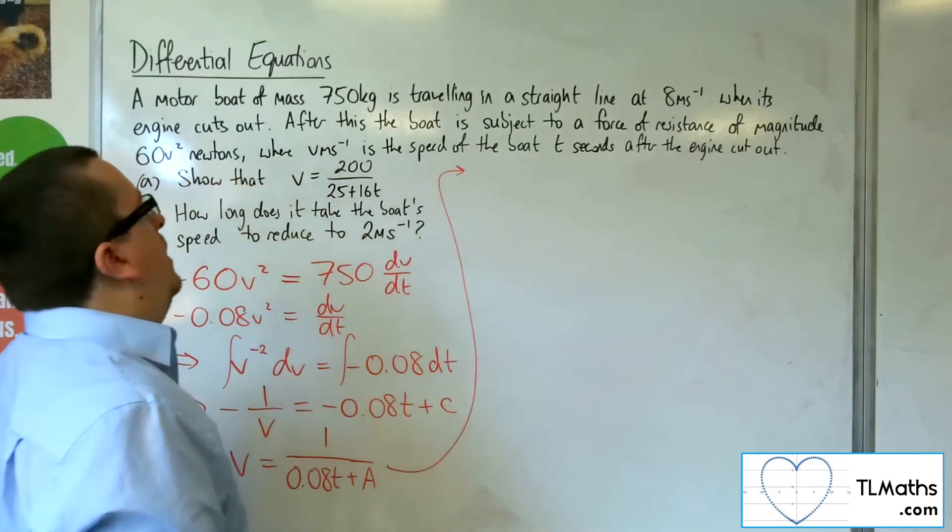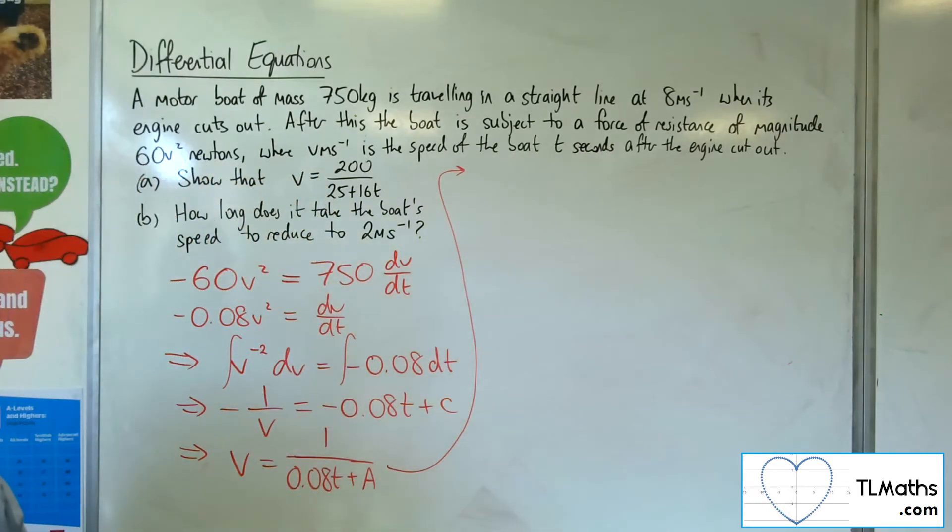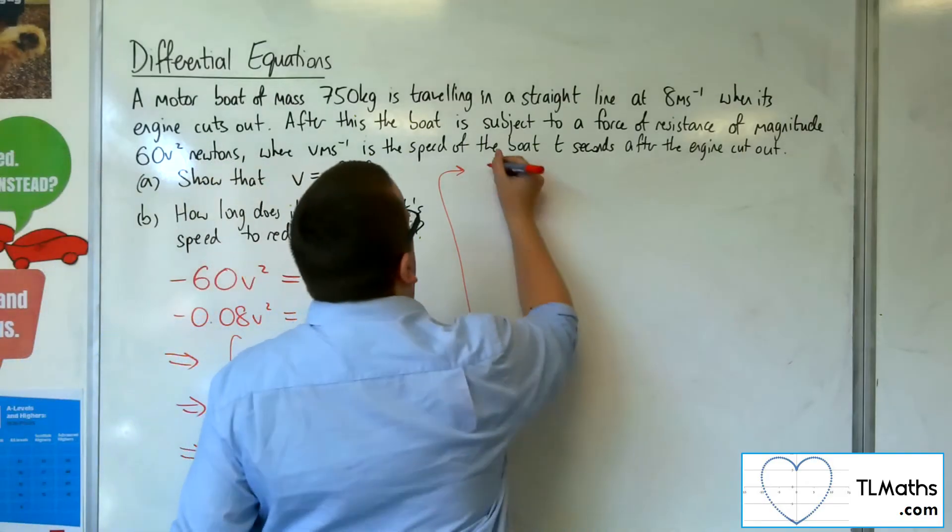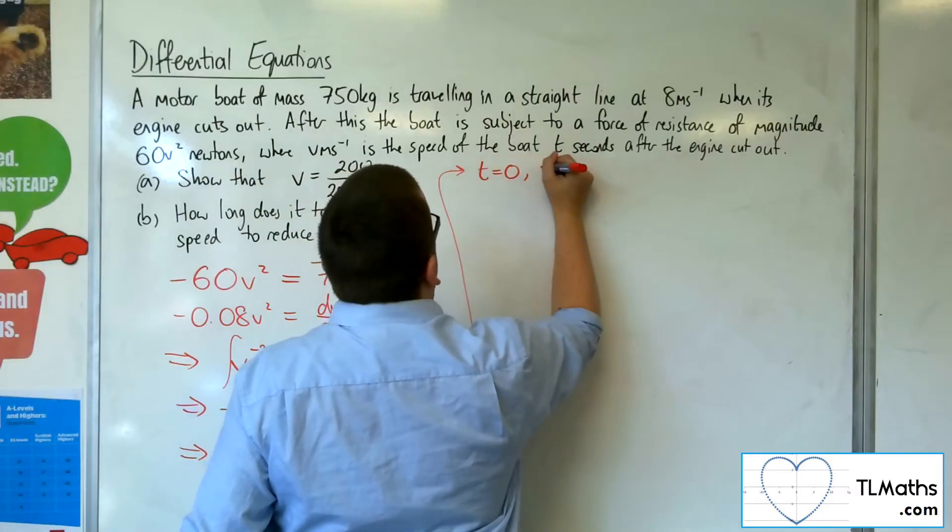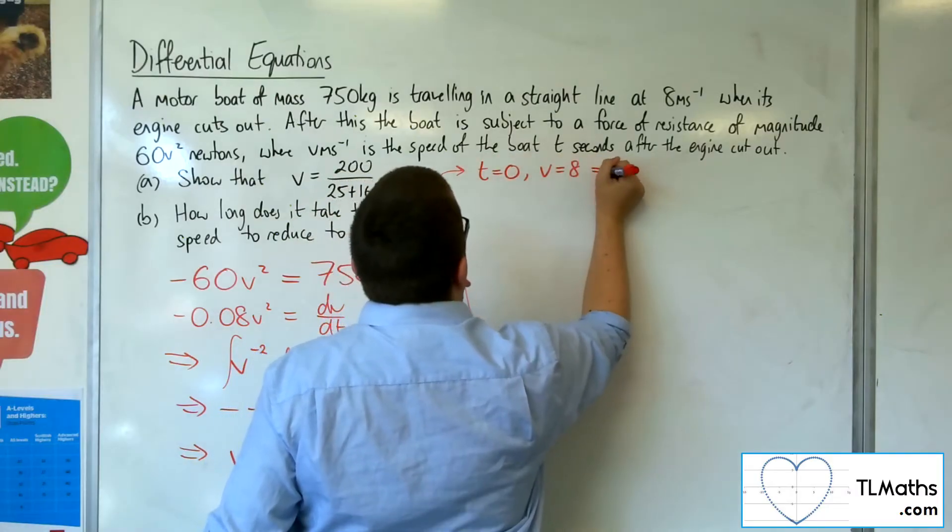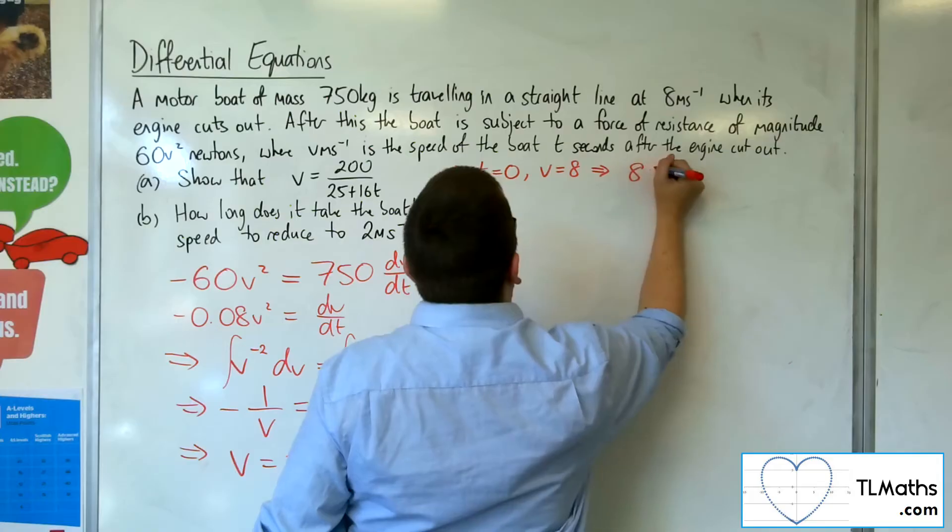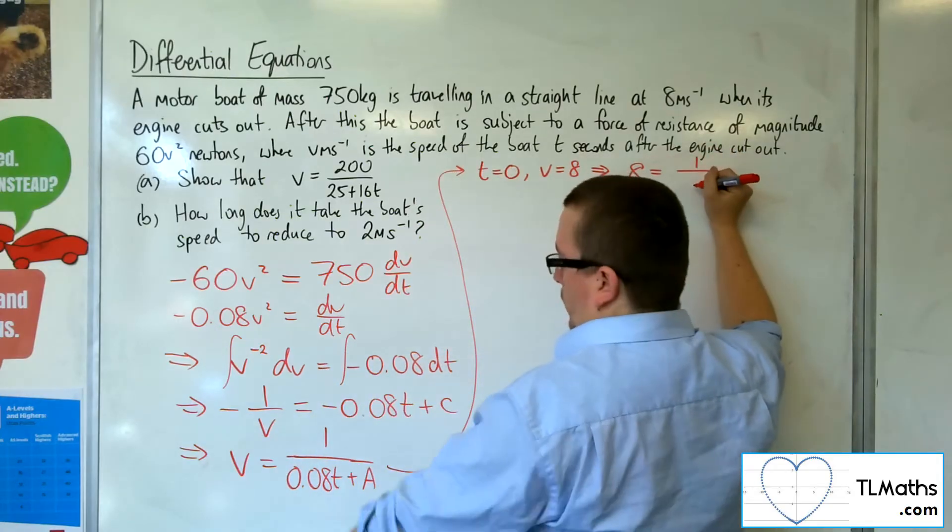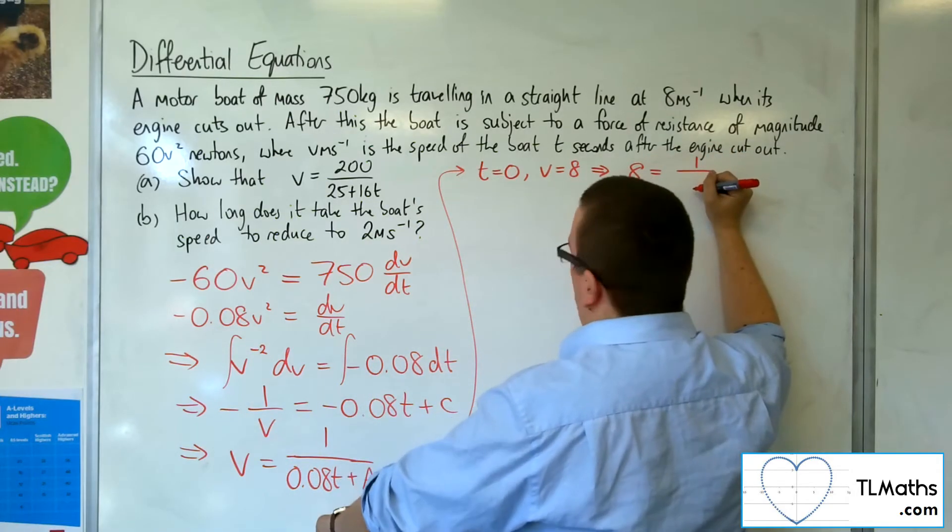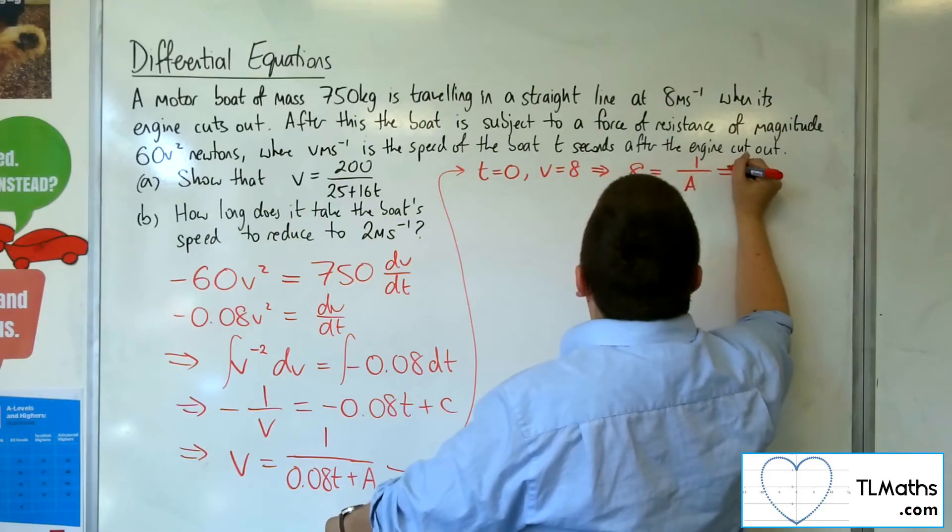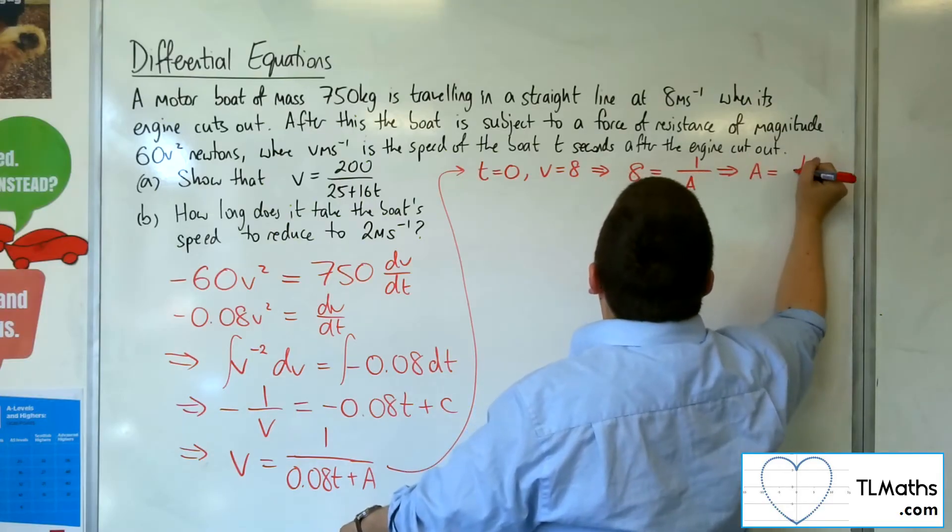So let's see what we've got. We know that the initial velocity when the engine cuts out is 8 metres per second. So when T is 0, V is 8. So we're going to have 8 equals 1 over, well, if T is 0, I'm just going to be left with 1 over A. So that means that A is 1 over 8.